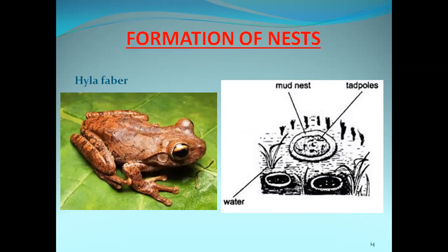The second category of parental care is Formation of Nests. A famous example for this is Hyla faber. Hyla faber constructs a special mud nest near the water body at its edge. It digs a hole and constructs a special mud nest, in which they lay the eggs. Once the rains come and the mud nest fills with water, the larvae enter into the water body — the pond.